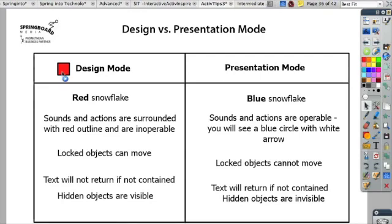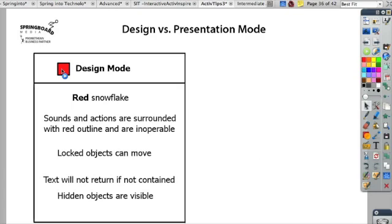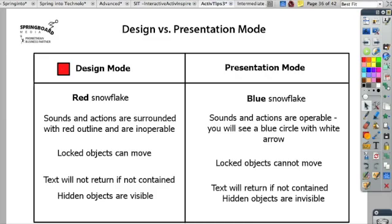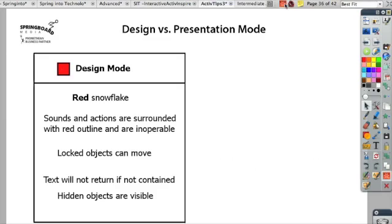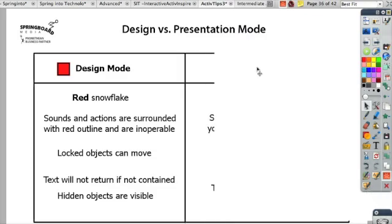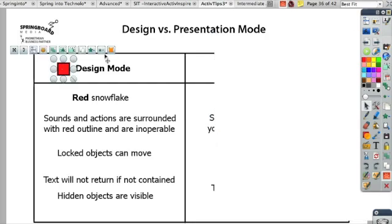Right now I have an action set up right here, and I can see that it's operable — it has the blue circle with a white arrow in it. This action just puts a white box on the screen that covers up the information from Presentation Mode. If I go into Design Mode, I can now see that this box is right here, and this object has a red outline around it.